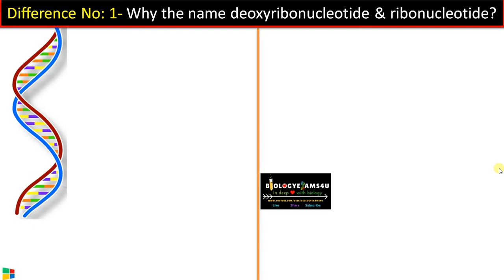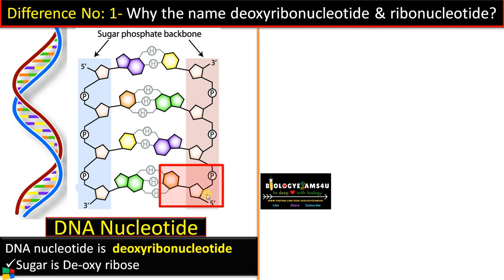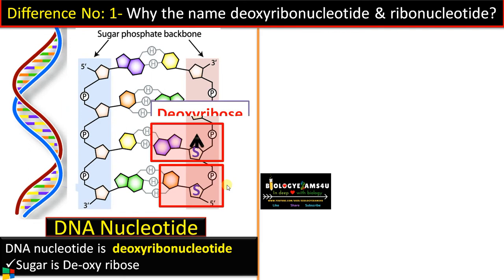Why the name deoxyribonucleotide and ribonucleotide? This is a double stranded DNA. Each chain is made up of nucleotides joined by phosphodiester bond. This is the first nucleotide and this is the second nucleotide. Each nucleotide consists of a phosphate, a sugar, and a nitrogenous base. In the case of DNA, the sugar is deoxyribose.